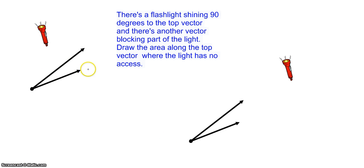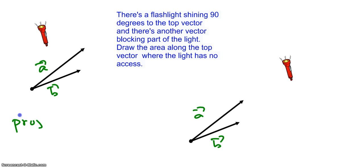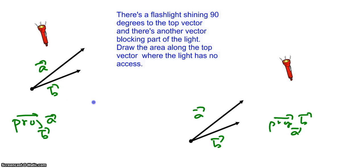Here's another example. We have two vectors that are identical — let's call the top one A and the bottom one B. We're going to draw the projection of A on B, and then the projection of B on A, so it's going to look different. For the projection of A on B, the vector is going to be somewhere along B — the question is how to draw it.